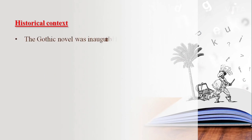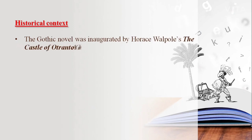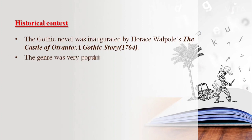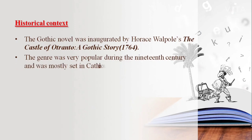It is Horace Walpole who elaborated the gothic genre through his masterpiece The Castle of Otranto. The genre was very popular during the 19th century and was mostly set in Catholic countries such as Italy and Spain.